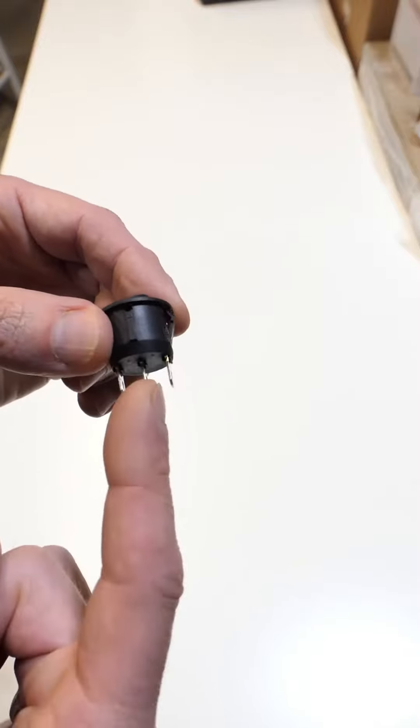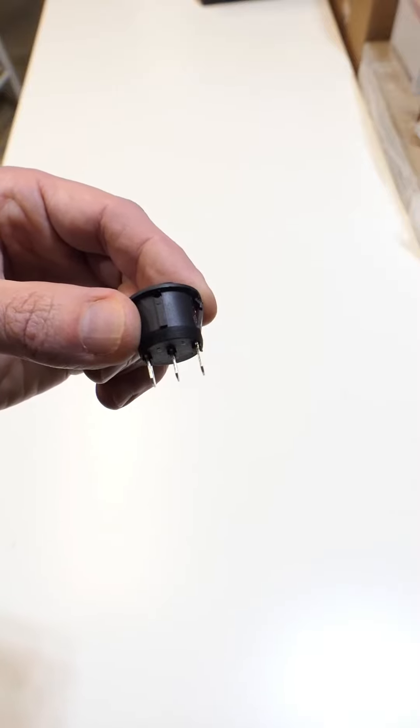There's three terminals. The center is the input and the two on the outside are the output. This is known as a single pole double throw.